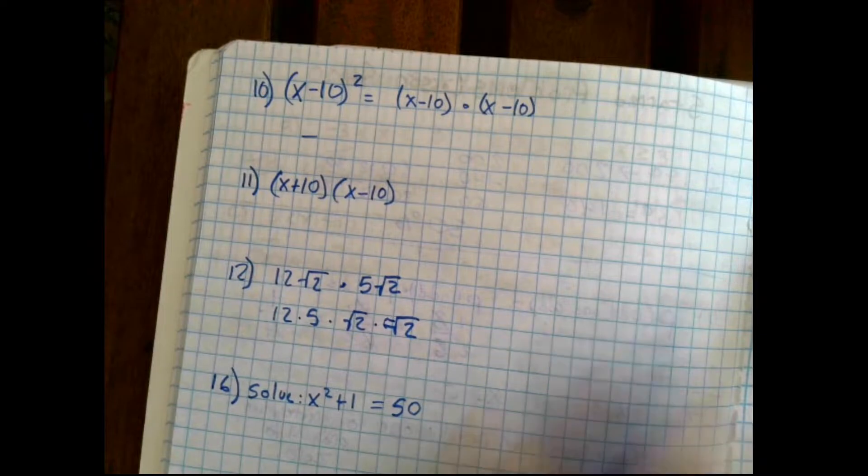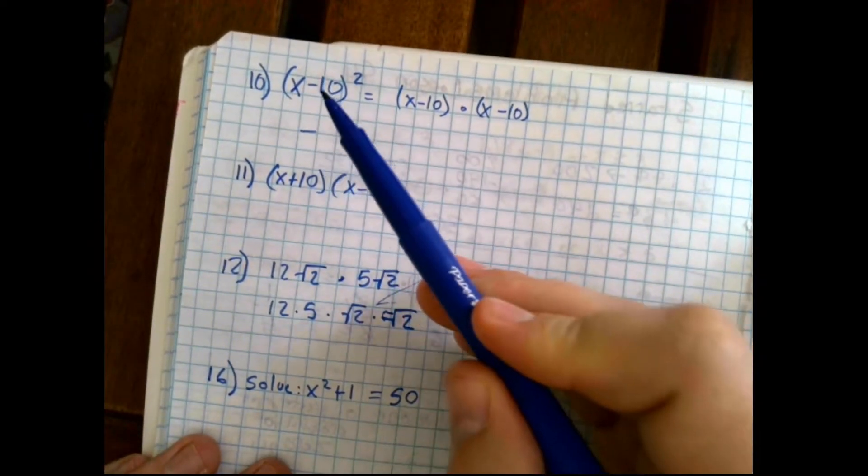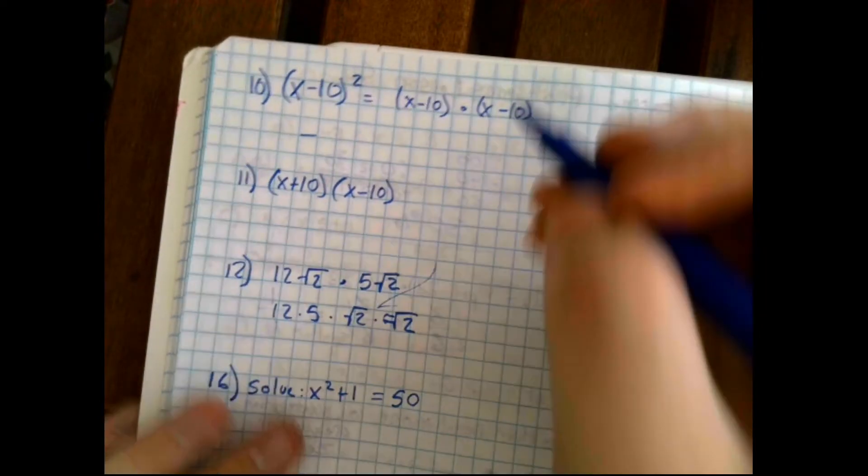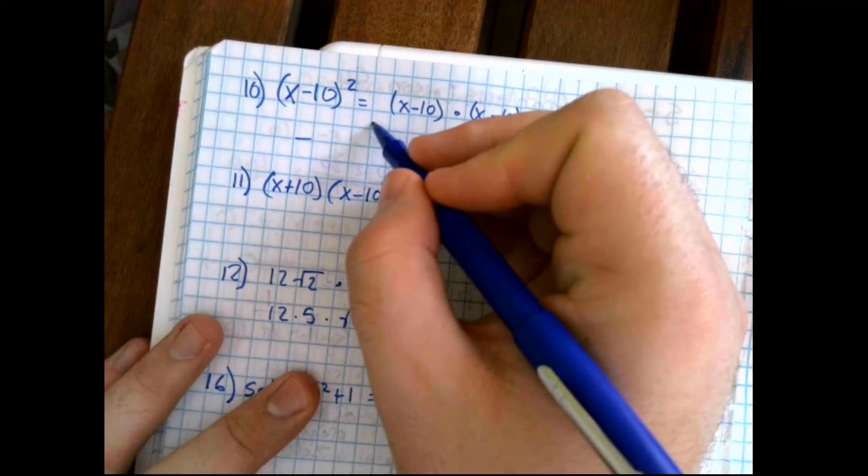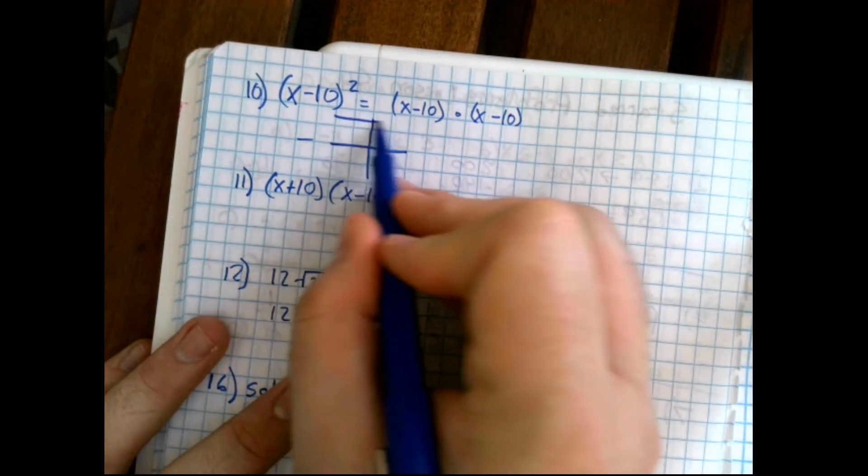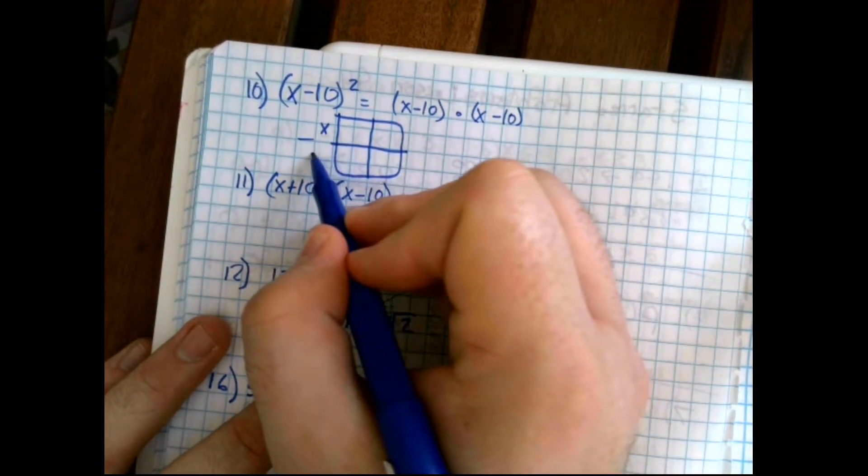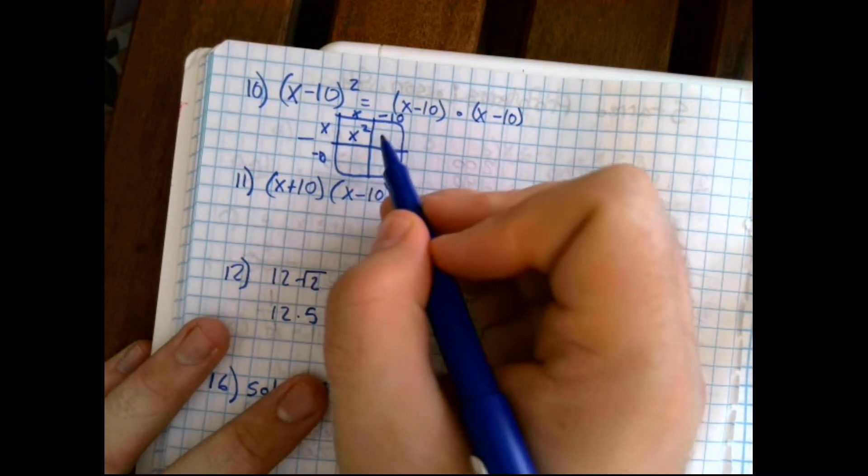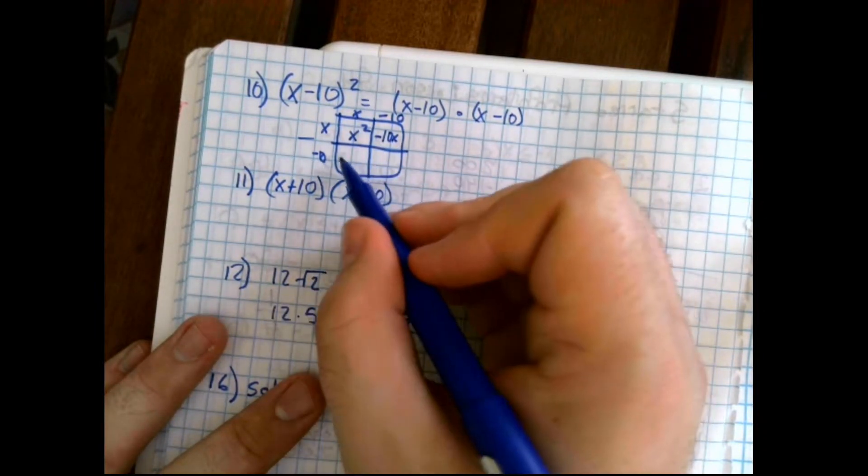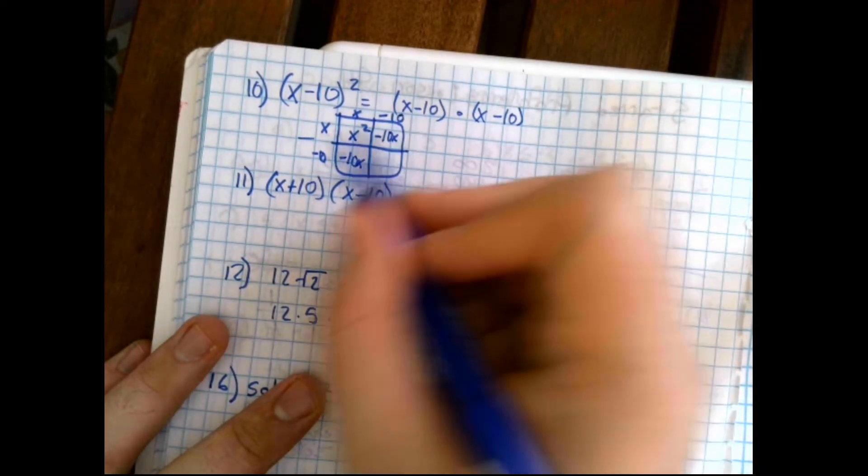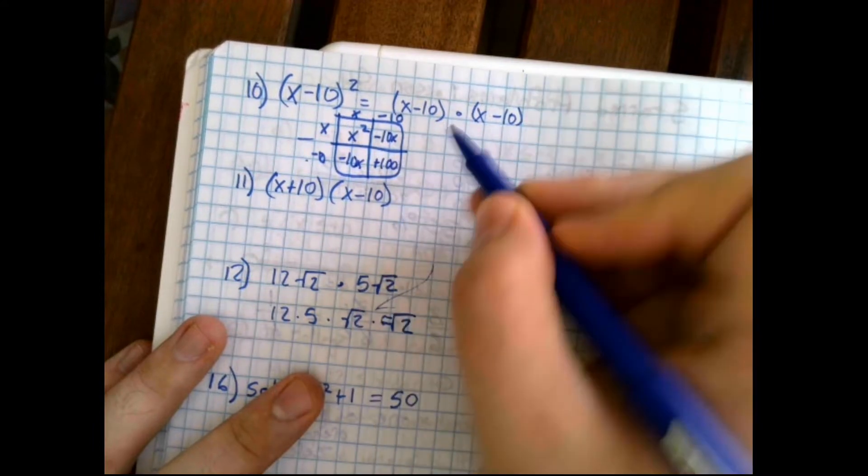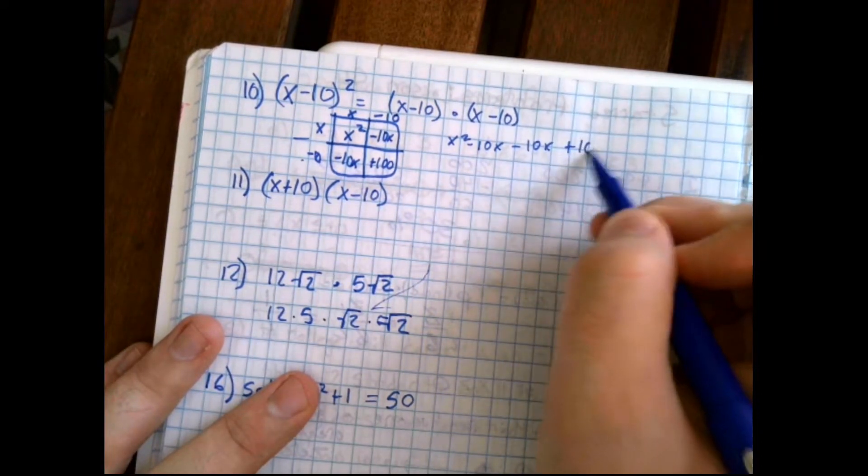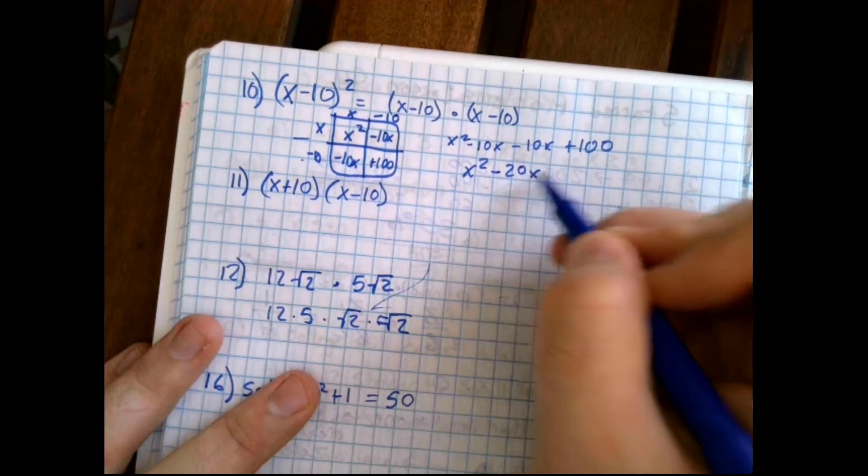So here we see that pattern again. So we can know that our answer is going to be x squared minus 20x plus 100, because negative 10 squared is going to be 100. Now, we should still show our work though. So let's do the box method on this one. We have x and negative 10, x and negative 10. x times x is x squared. x times negative 10 is negative 10x. x times negative 10 is negative 10x. Negative 10 times negative 10 is plus 100. Giving us x squared minus 10x minus 10x plus 100, or x squared minus 20x plus 100.